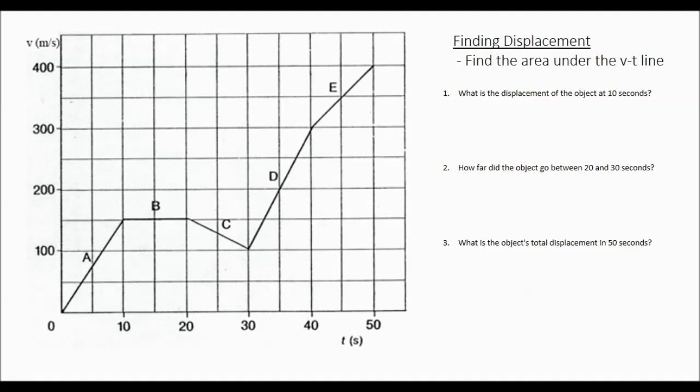To find the displacement on a velocity time graph, we find the area under the velocity time line.